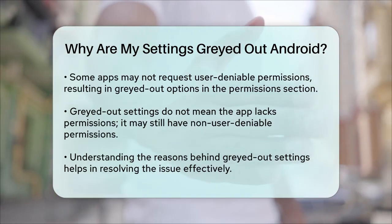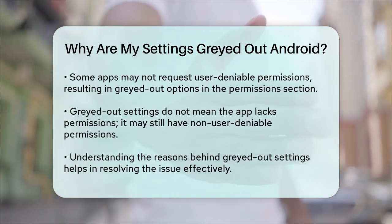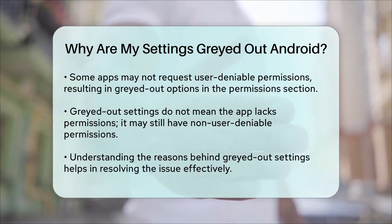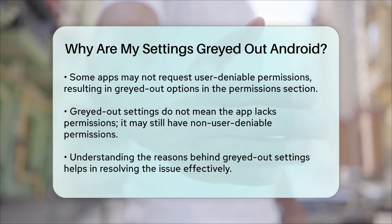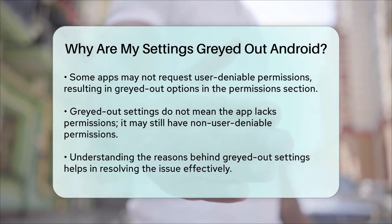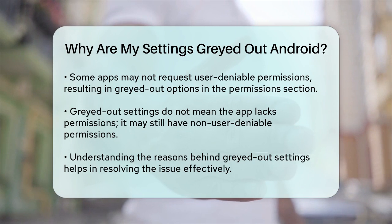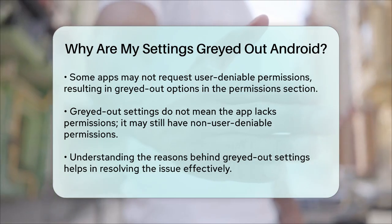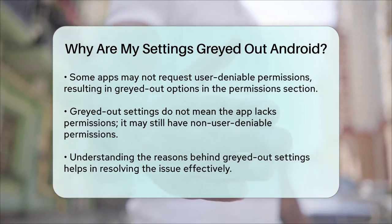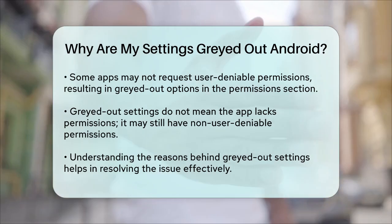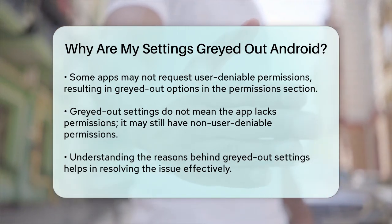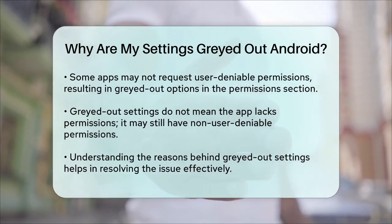To summarize, grayed out settings on Android can be due to various reasons, such as camera settings needing a reset, new security restrictions in Android 13, or system app permissions being configured in a way that prevents user changes. By understanding the specific reason behind the issue, you can take the appropriate steps to resolve it and regain full functionality of your device's features.